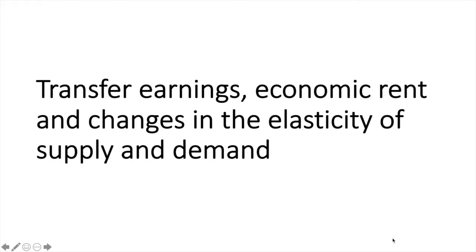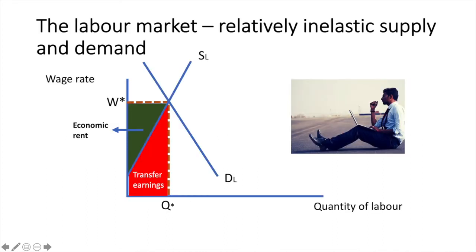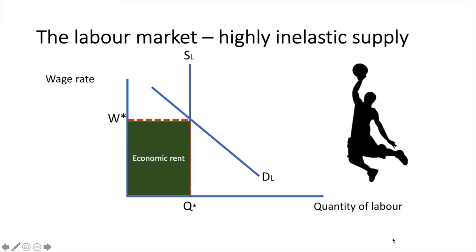Next, we are going to examine how transfer earnings and economic rent change with different elasticities of supply and demand. Consider the market for software engineers. Assuming their demand and supply are relatively inelastic, we can see the impact this has on economic rent and transfer earnings. The more inelastic supply is, the greater the economic rent would be. Similarly, with more elastic supply, the greater transfer earnings would be.